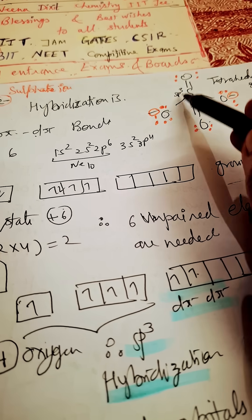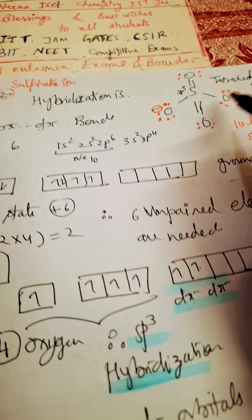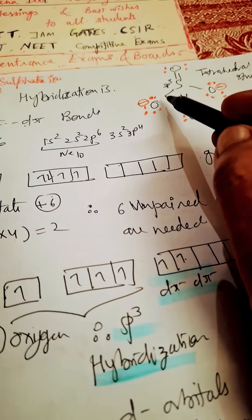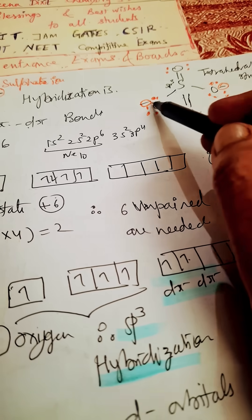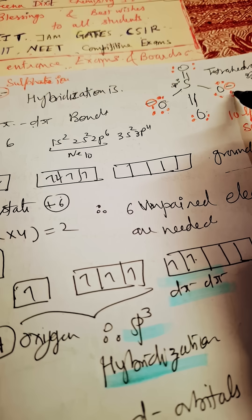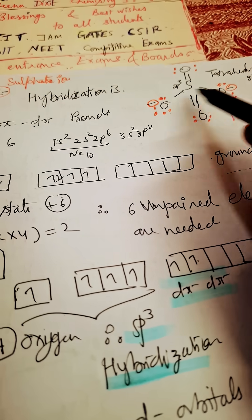...pi bonds are there and one, two, three, four - four sigma, two pi. How many lone pairs of electrons are there? Since each negatively charged oxygen carries three lone pairs, so three lone pairs here, three lone pairs here...